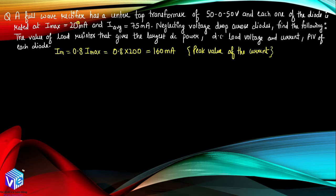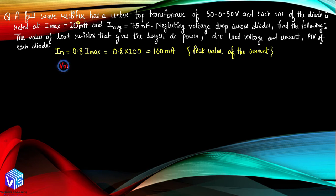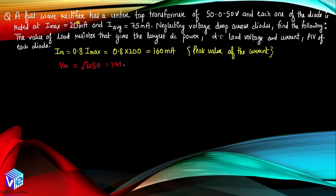Now we can find out Vm, the peak value of voltage. With the help of the transformer rating given as 50-0-50 volt, the peak value is related to the RMS value as √2 into the RMS value. So it will be √2 into 50, which is 1.41 into 50, giving us 70.5 volt. Now I have Vm and I_m.